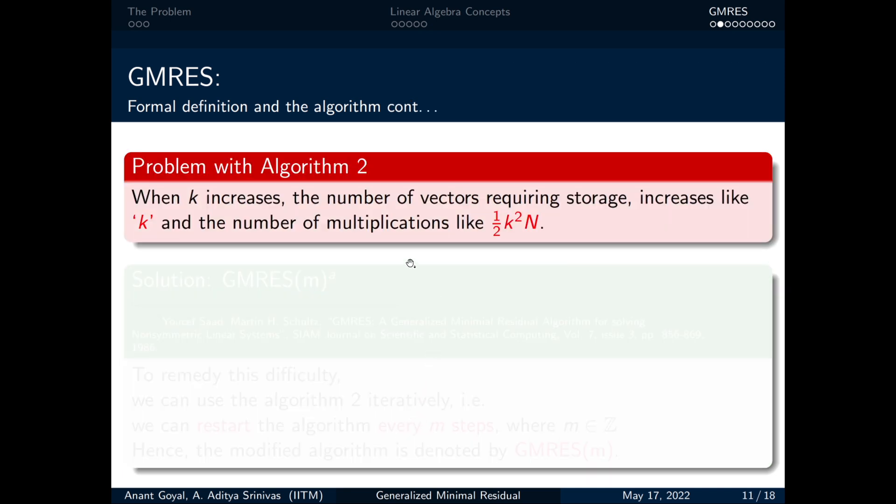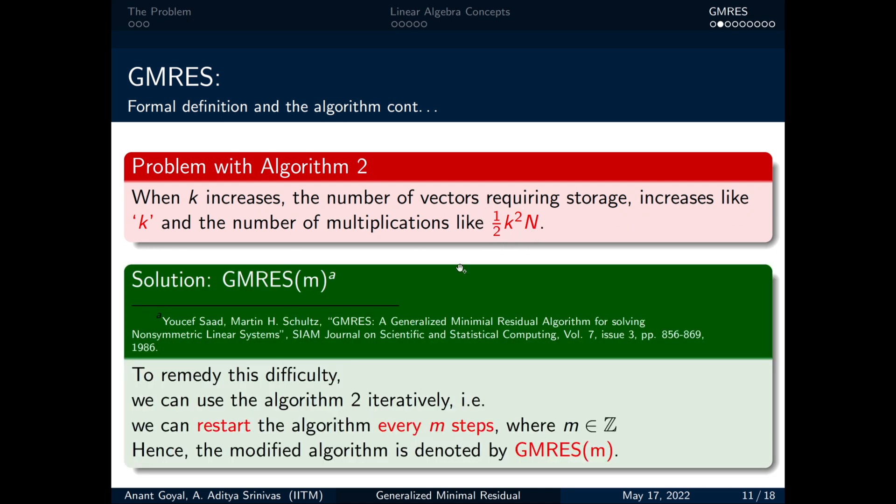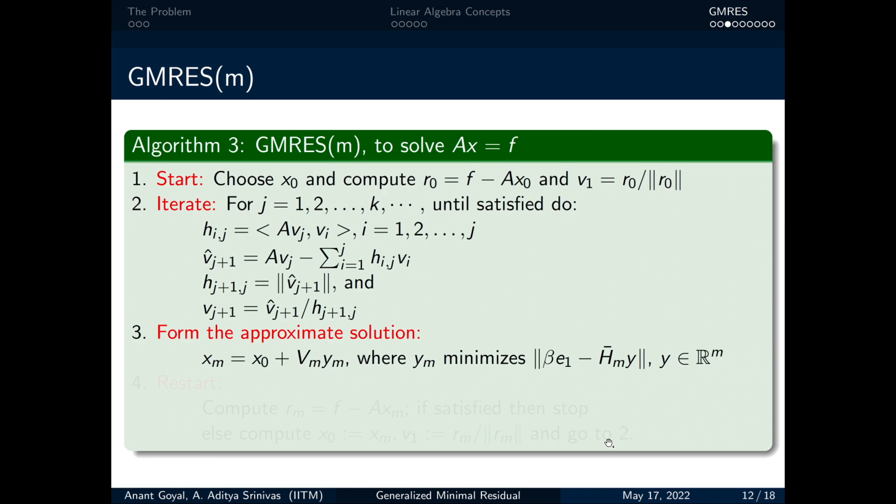But wait, there is a problem when the number of iterations that is k increases. The storage requirements and the operations increase tremendously as shown by k and half k²n respectively. But there is a catch. We can restart the same algorithm repeatedly after a fixed number of steps while storing the results of the previous run and using them as input to the present run which we call as GMRES(m).